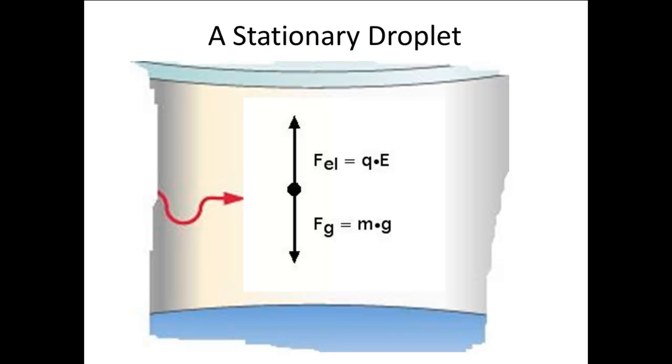We could determine the charge on the droplet if we knew the mass of the droplet. To determine the mass of the droplet, Millikan simply shut off the electric field. The droplet began to fall, but quickly reached a constant speed.